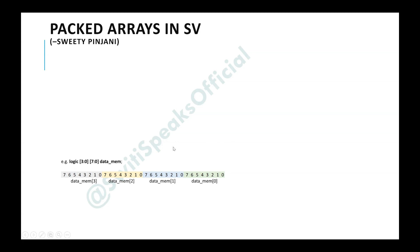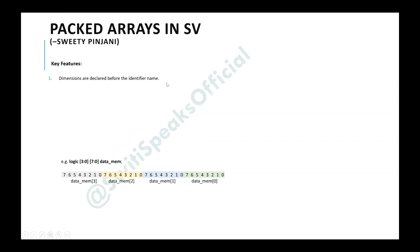Let's first see the key features. The first feature is that dimensions are declared before the identifier name. For example, data_mem is the identifier name, and the dimensions 3 down to 0, 7 down to 0 are declared before this identifier name.